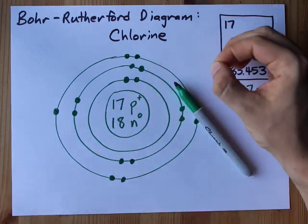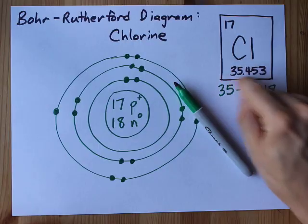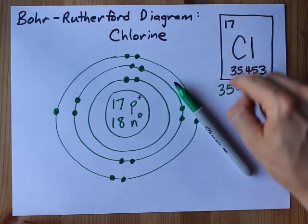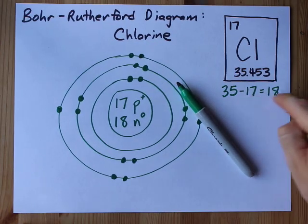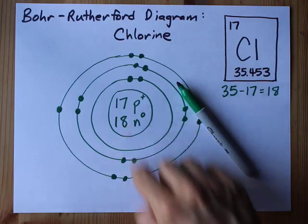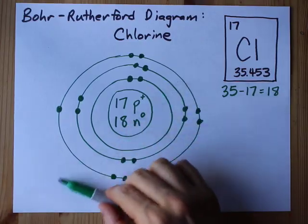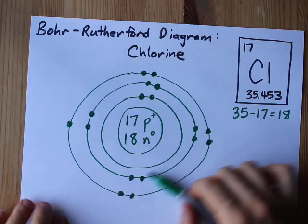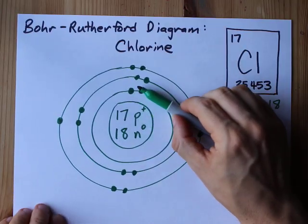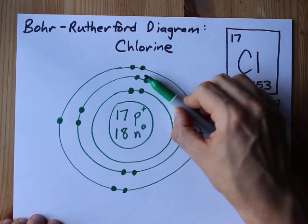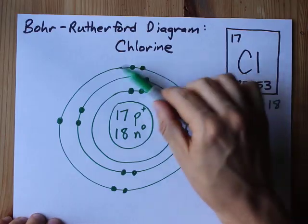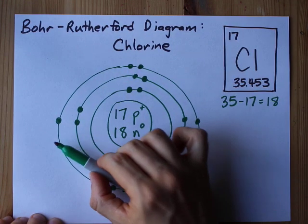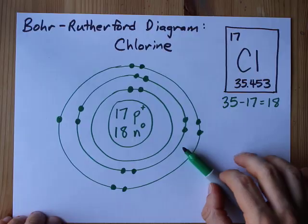17 protons for the atomic number. 35 rounded minus 17 gives me 18 neutrons, check. And then 17 electrons in the shells around it: 2 in the first, up to 8 in the second, and then up to 8 in the third. But I didn't need to fill it entirely with all 8 because I only needed 7.